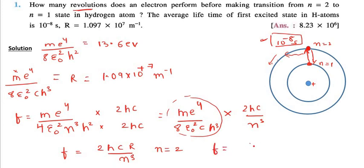Frequency f equals 2 into h value into c value into R value upon 2 cube. I leave it to my fine viewers to solve this and if you will solve this you will get the value of frequency as 8.23 into 10 raise to 14 second inverse. That means in second orbit